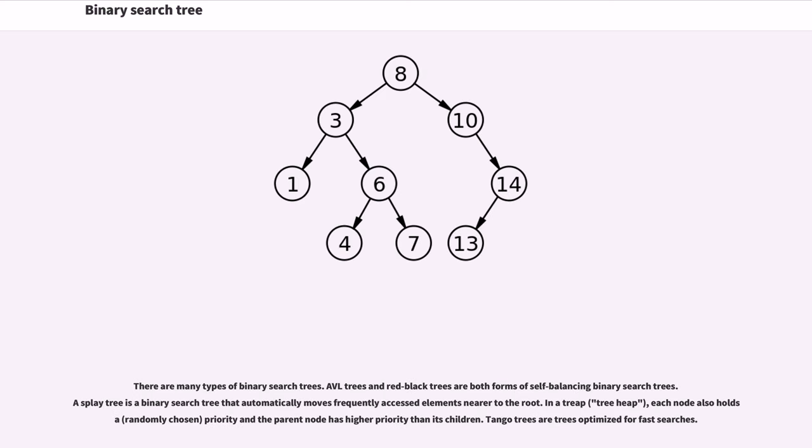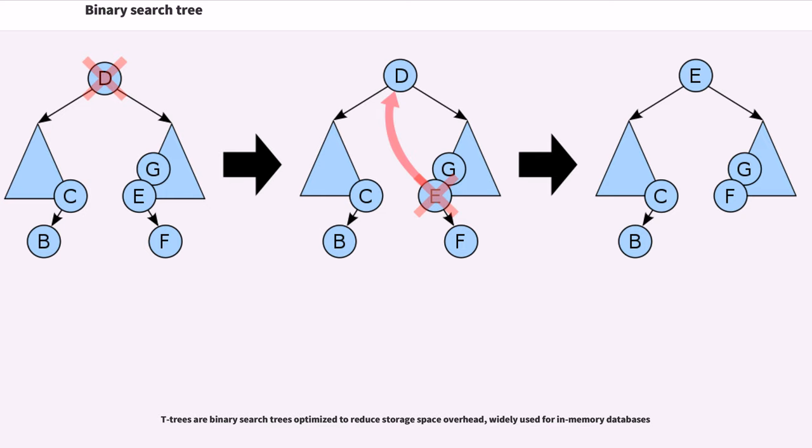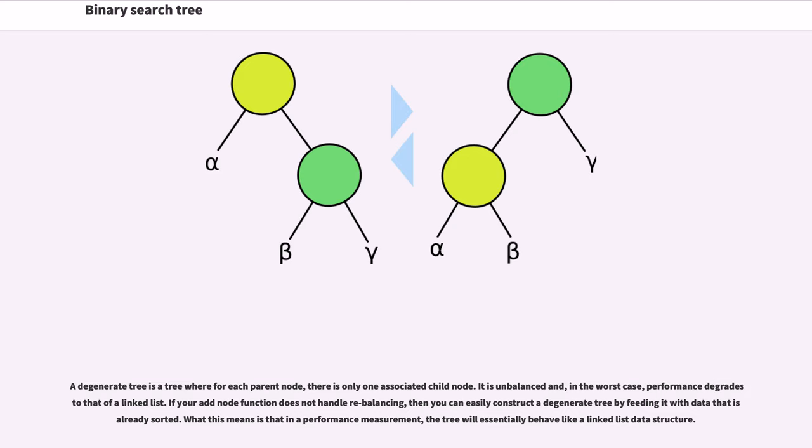There are many types of binary search trees. AVL trees and red-black trees are both forms of self-balancing binary search trees. A splay tree is a binary search tree that automatically moves frequently accessed elements nearer to the root. In a treap, each node also holds a randomly chosen priority and the parent node has higher priority than its children. Tango trees are trees optimized for fast searches. T-trees are binary search trees optimized to reduce storage space overhead, widely used for in-memory databases. A degenerate tree is a tree where for each parent node there is only one associated child node. It is unbalanced and, in the worst case, performance degrades to that of a linked list. If your add node function does not handle rebalancing, then you can easily construct a degenerate tree by feeding it with data that is already sorted.